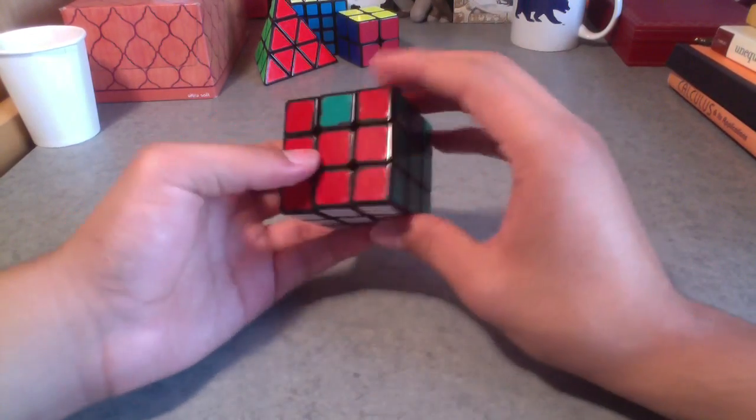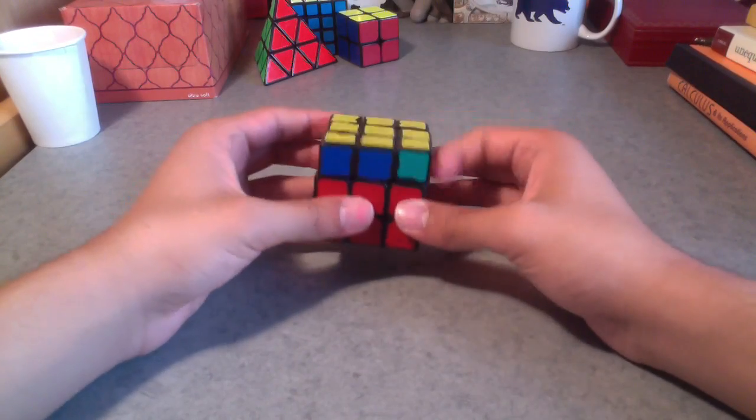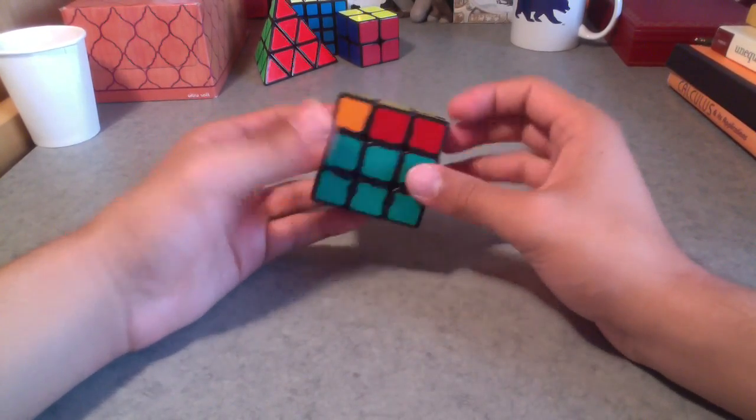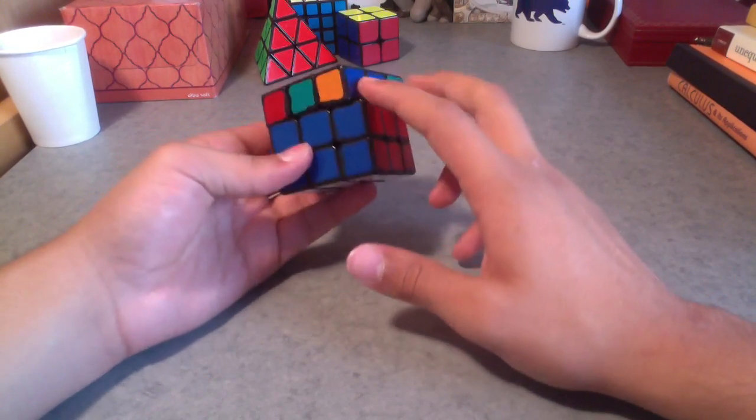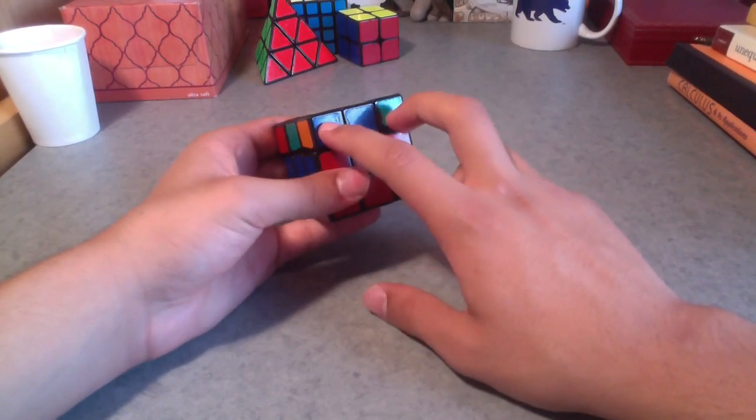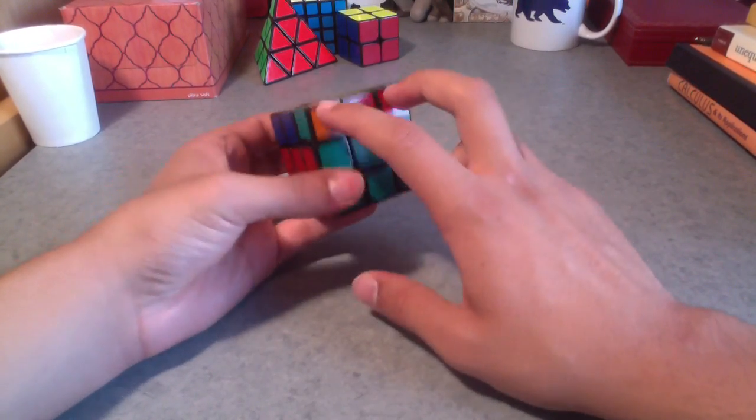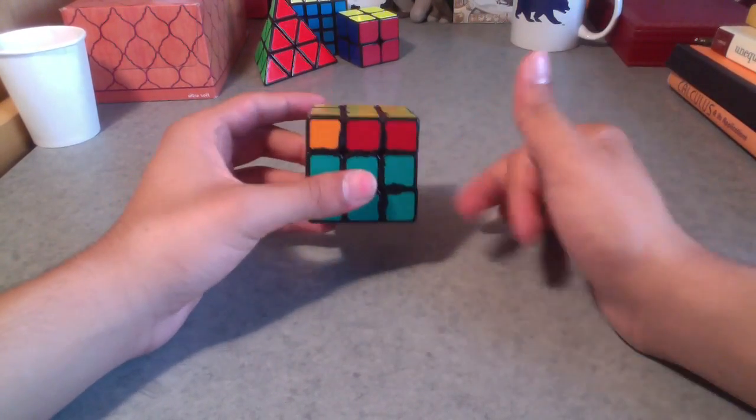So before I teach you this step, let me just point out that sometimes when you're starting the last layer, after you orient the entire top, you'll be looking for headlights, and you won't have them. Because it only works if you have two corners of the same color on this side, like this blue-green, orange-red, like you don't have headlights here. So in this case, you just, from any angle you want, you can just do that algorithm I just showed you.